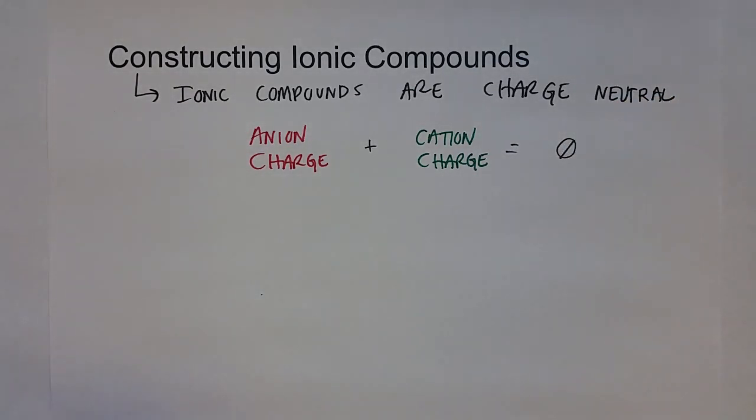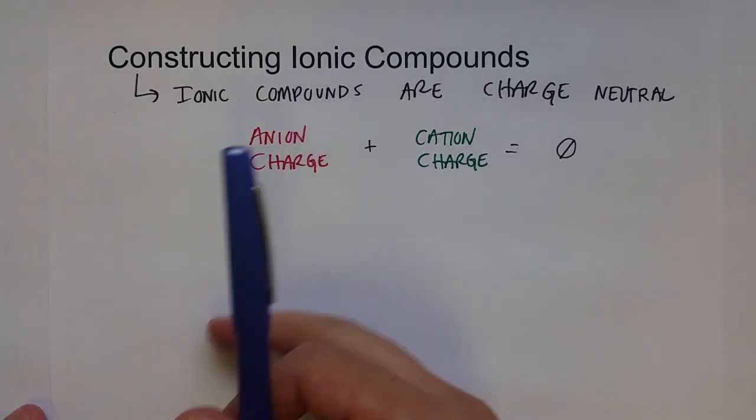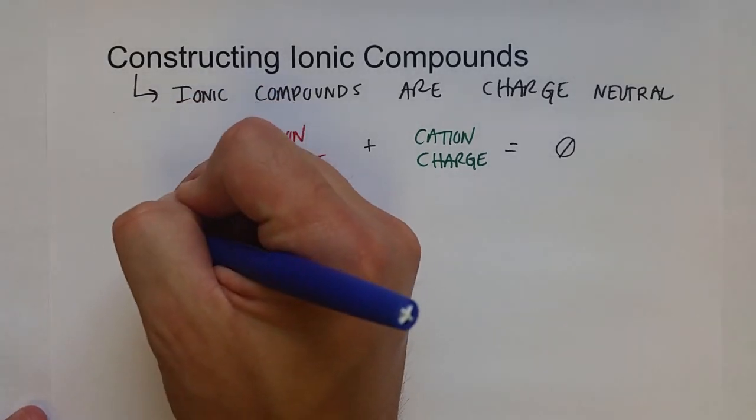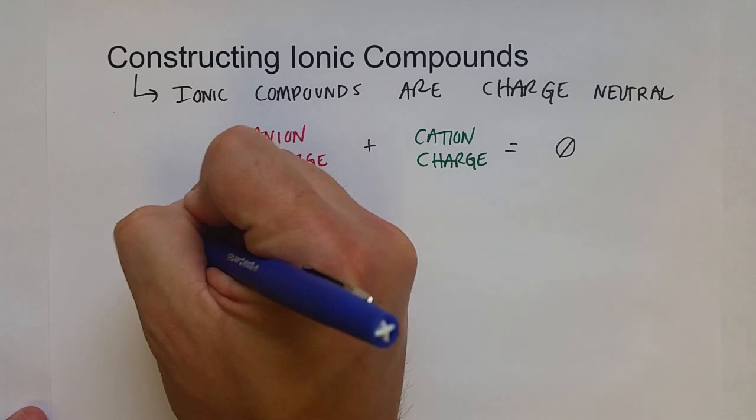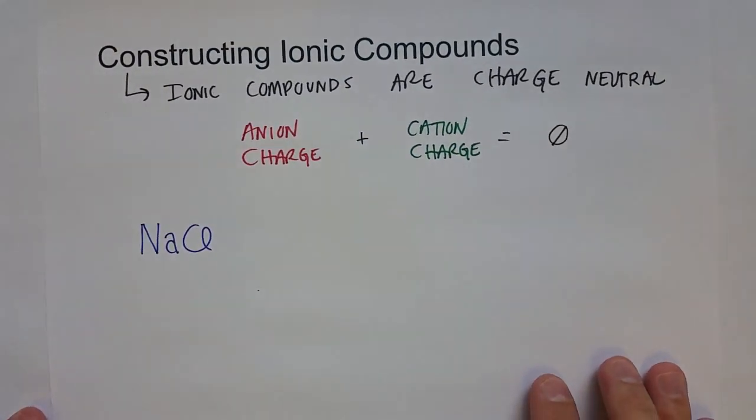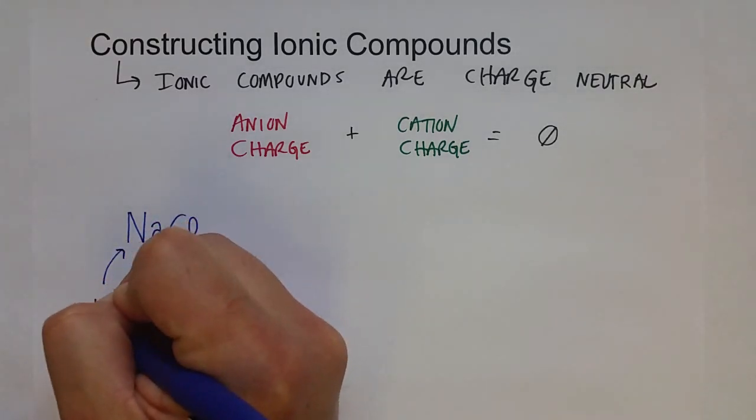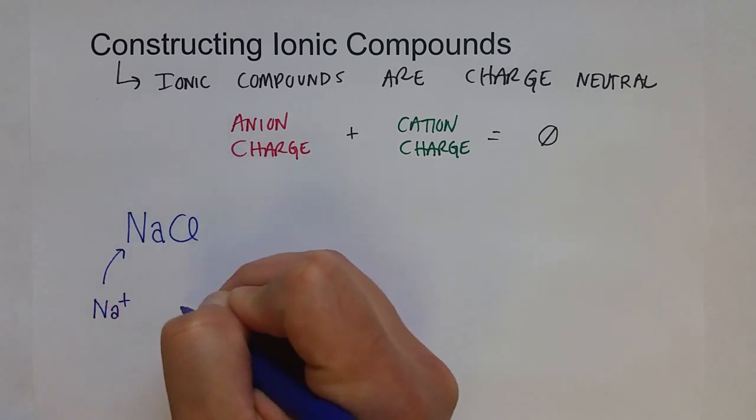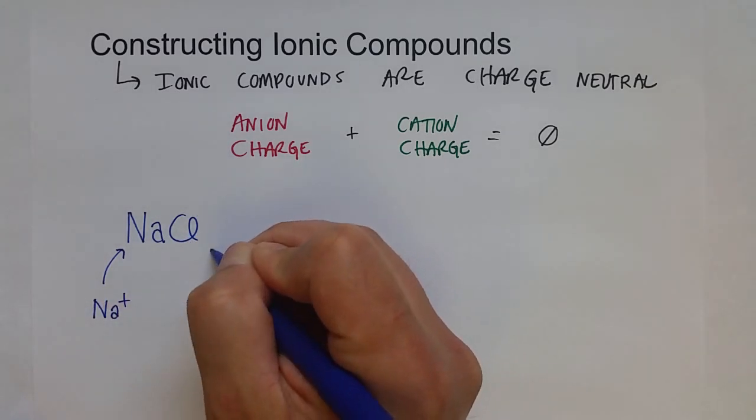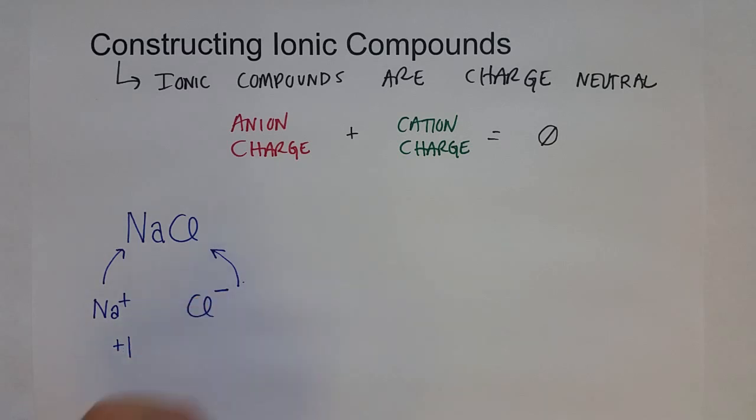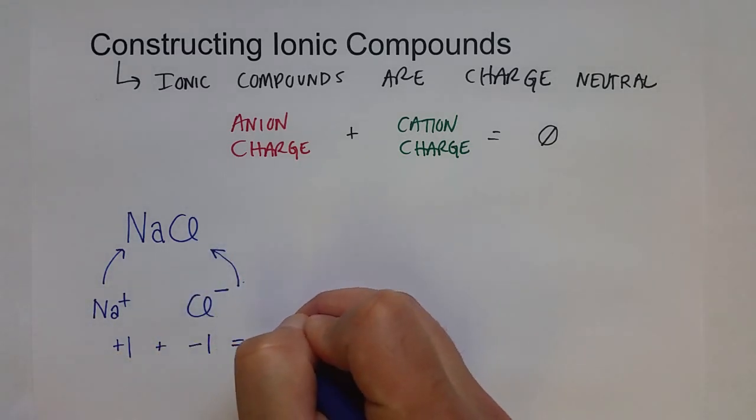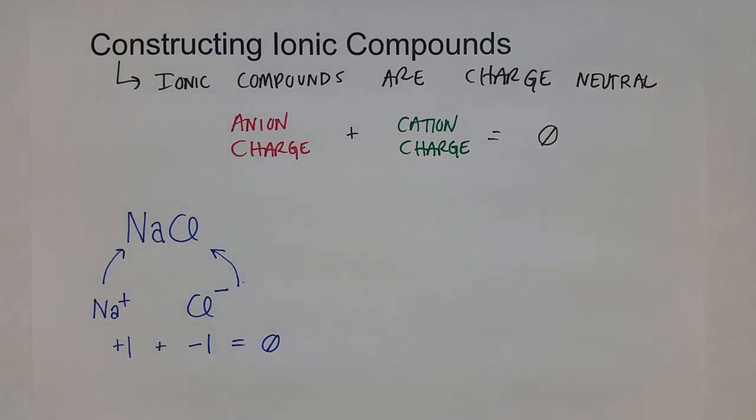You probably already know that the formula for sodium chloride is NaCl, meaning that there's one sodium cation for every one chloride anion. That is because the sodium atom is a plus one and the chloride anion is a minus one. And so when they form a compound together, they will react in a one-to-one ratio so that the overall charge of the compound is zero.